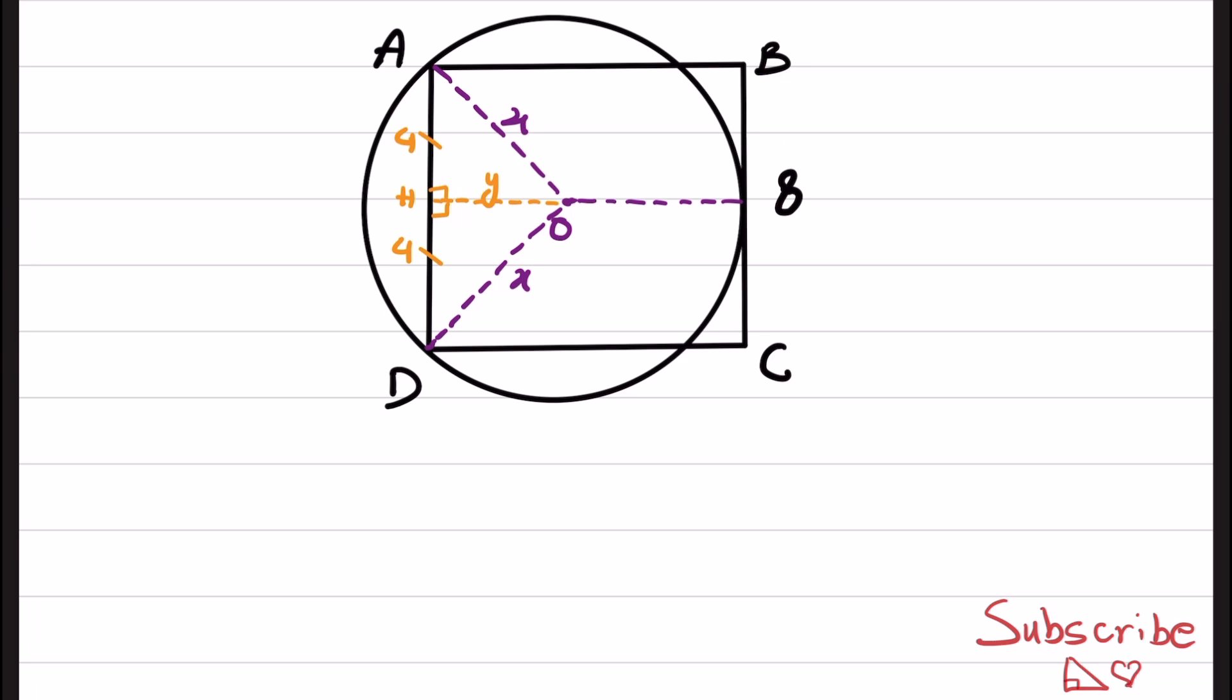If we take a look at this triangle, it's a right triangle, and we can apply Pythagorean theorem. So for triangle AHO, we know that X squared is equal to 4 squared plus Y squared. And from this, Y is equal to square root of X squared minus 16.